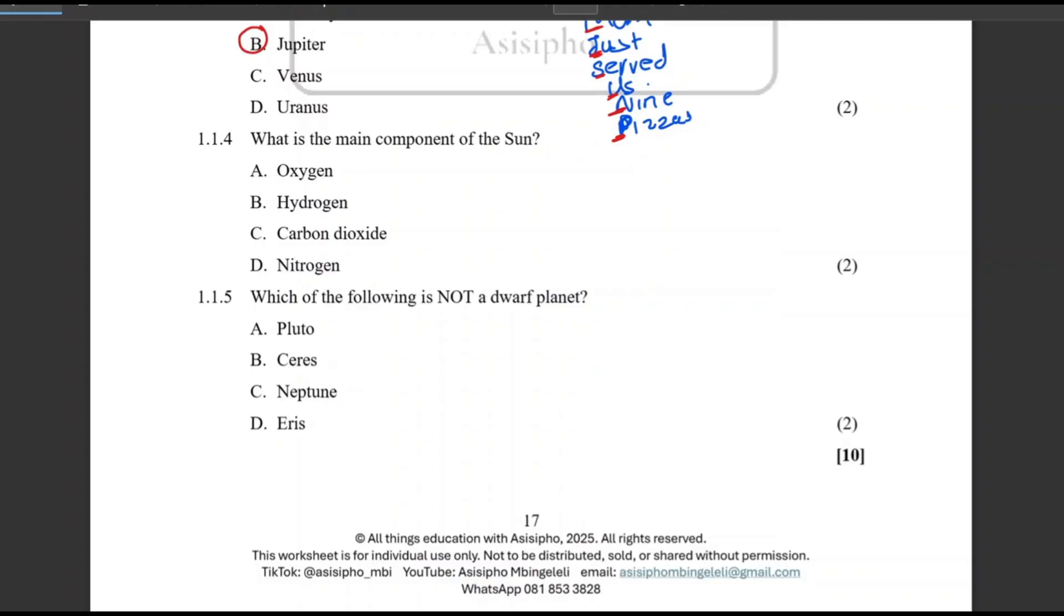Question 1.1.4, what is the main component of the sun? Easy peasy. That will be hydrogen.